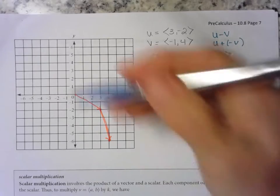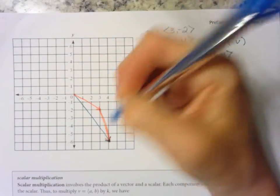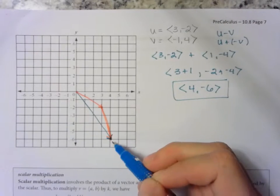The resultant vector is this one. So <4, -6>.